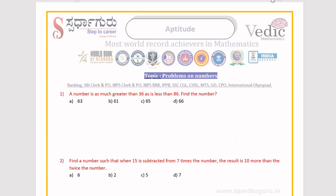Let's see the first problem. A number is as much greater than 36 as is less than 86. Find the number. Here, consider that number as x. So x is much greater than 36.